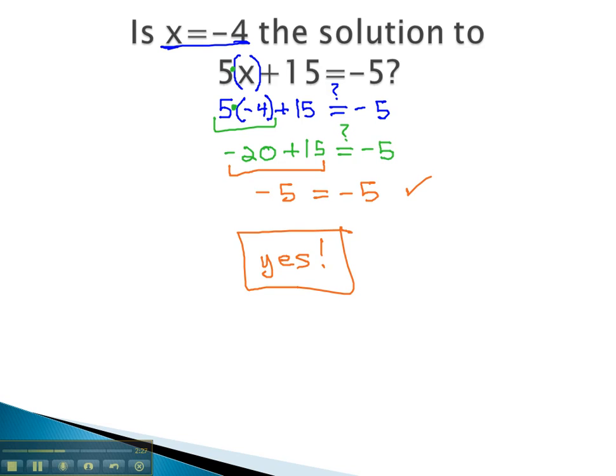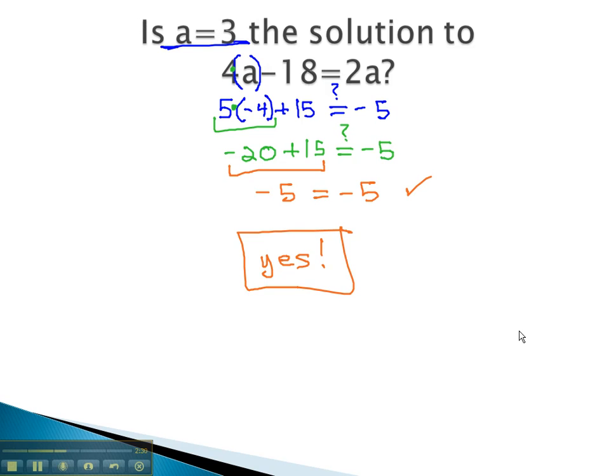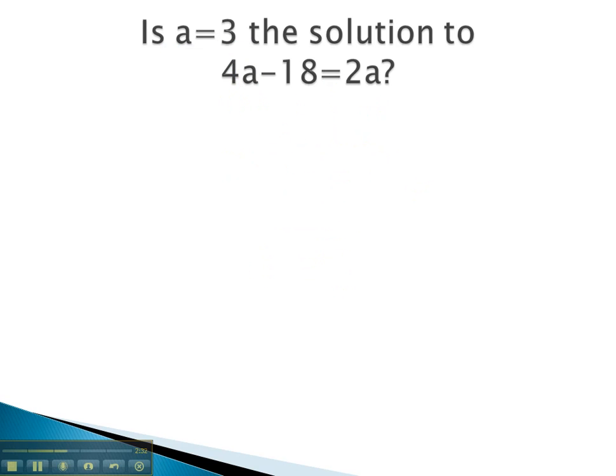Let's take a look at another example. This problem is a little more involved. We want to know if a = 3 is the solution to 4a - 18 = 2a. Here there's an a on the left side and an a on the right side of the equation. But the pattern is still the same. To test if this is the solution, we replace the variable with that number. So we have 4(3) - 18, and we want to know if it really equals 2a.